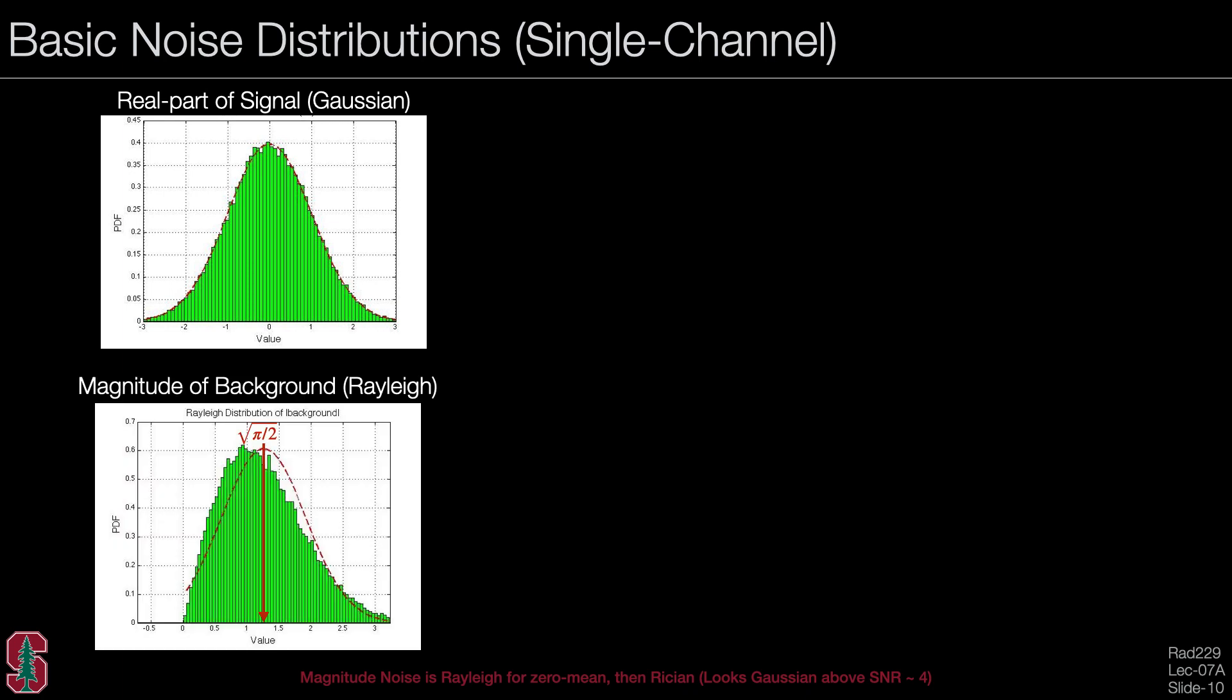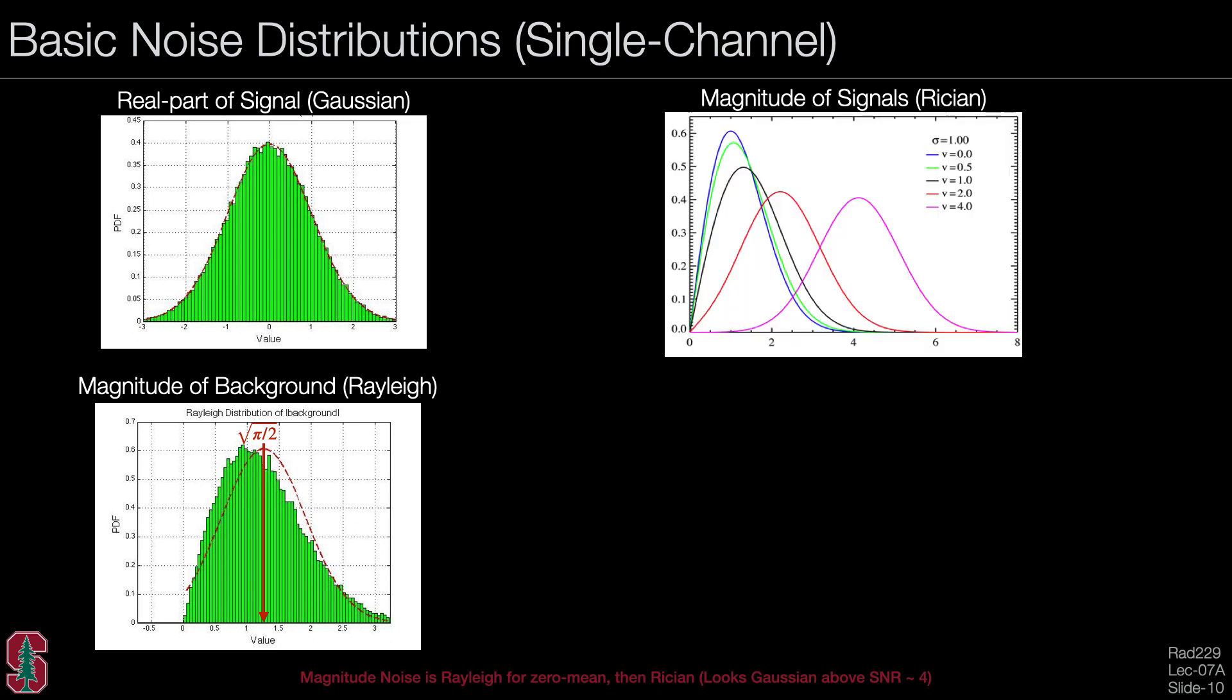Now let's look at basic probability distributions for noise for single channel cases. If we take the real part of the signal, it will be Gaussian because we've taken a Fourier transform. If we take the magnitude of the background, this is Rayleigh distributed. The Rayleigh distribution looks like this - the mean is no longer 0 and the distribution is not purely Gaussian anymore. If we slowly add a bit of signal, we can see how this distribution transitions from the Rayleigh distribution at the far left towards a Gaussian-like distribution, again at an SNR of about 4 or higher.